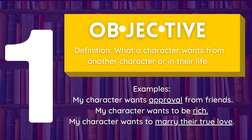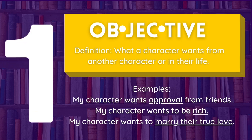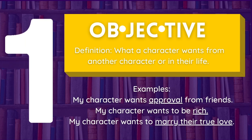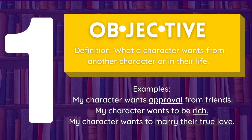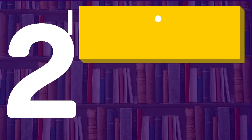Number one: objective. An objective is something that a character wants from another character or in their life, like approval from your friends, wanting to be rich, or wanting to marry your true love.